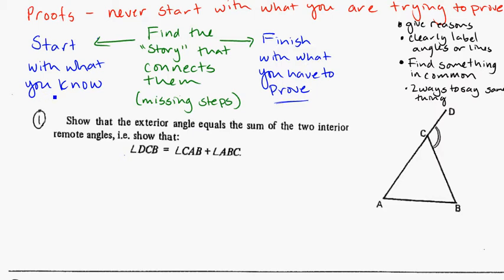You want to start with something else you know from the diagram. Finish with what you have to prove. And the part in between is finding the story that connects the two things. Finding those missing steps that puts the start to the finish together.